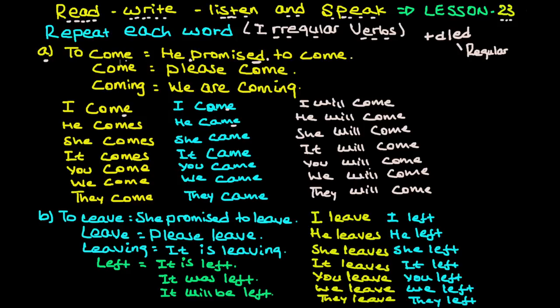Let's start with 'come.' Come means to arrive or approach. For example: 'He promised to come.' 'Come, please come' is a polite request. 'Coming' - we are coming - can mean both present continuous and future tense. Now let's look at how 'come' changes in different tenses. Pay attention to the auxiliary verbs and the form that follows.